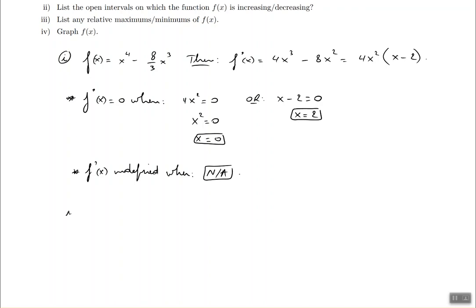Part 2 of the question is to list the open intervals on which the function is increasing or decreasing. I'm going to draw the number line that represents all the numbers in the world, negative infinity all the way to positive infinity. I'm going to put the critical numbers on it, those are 0 and 2. I'm going to write down f prime on the side because we will repeat the same procedure when we do the second derivative. I need some test values.